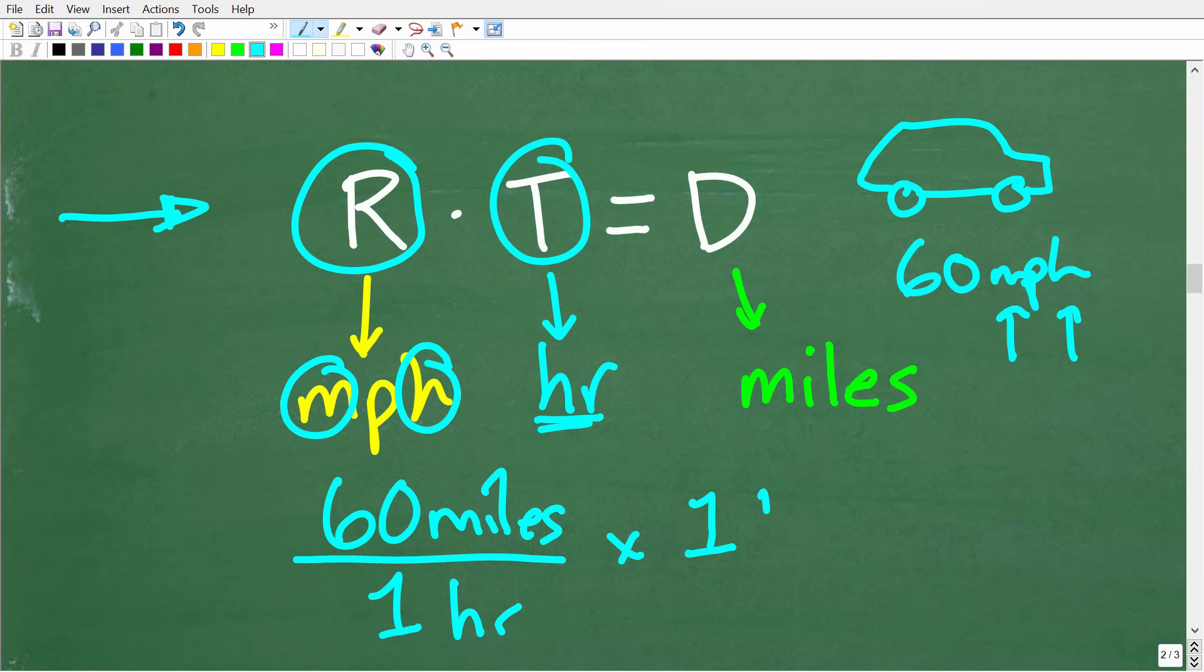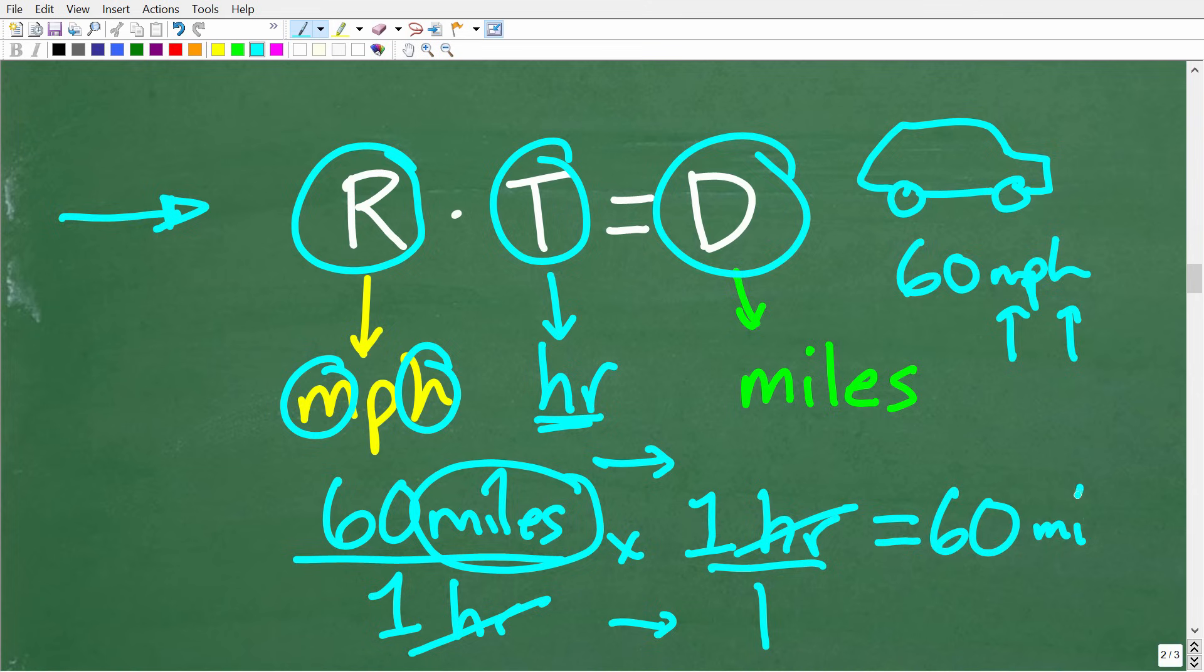But the way this works is that the units of measure here are going to cross-cancel. When we multiply two fractions, we're going to multiply the respective numerators and denominators. The hours cross-cancel and we're left with miles. So our answer here is 60 miles.